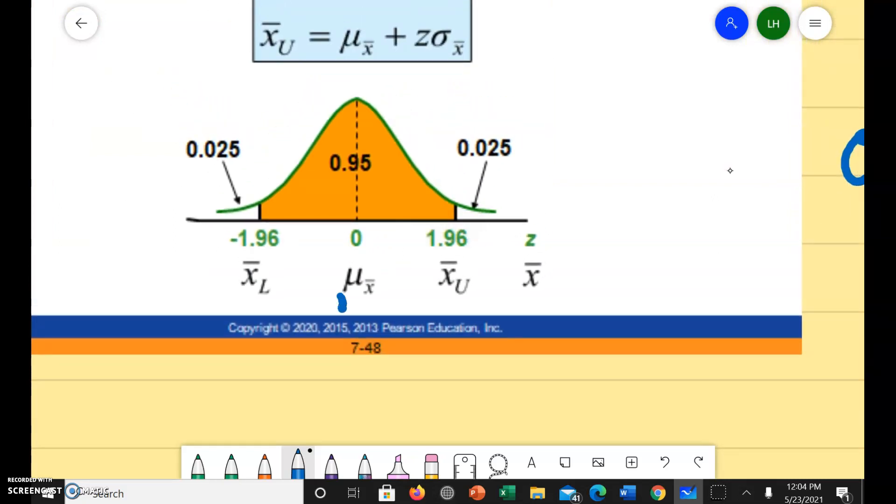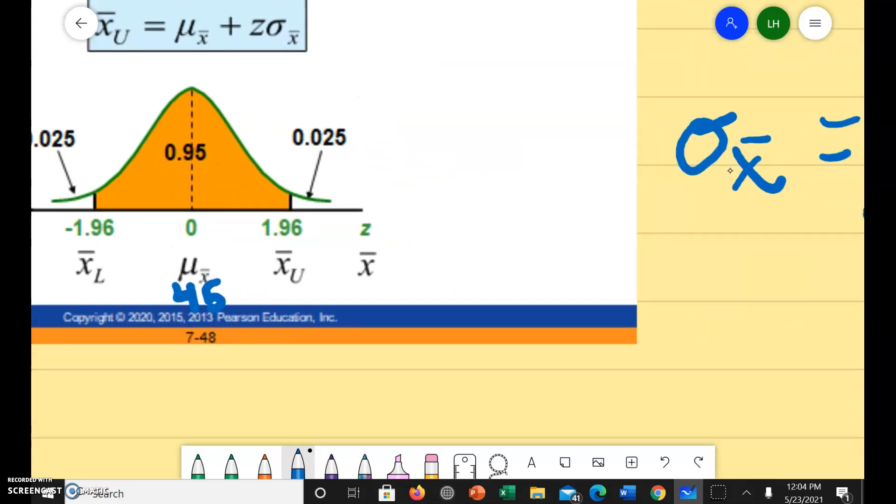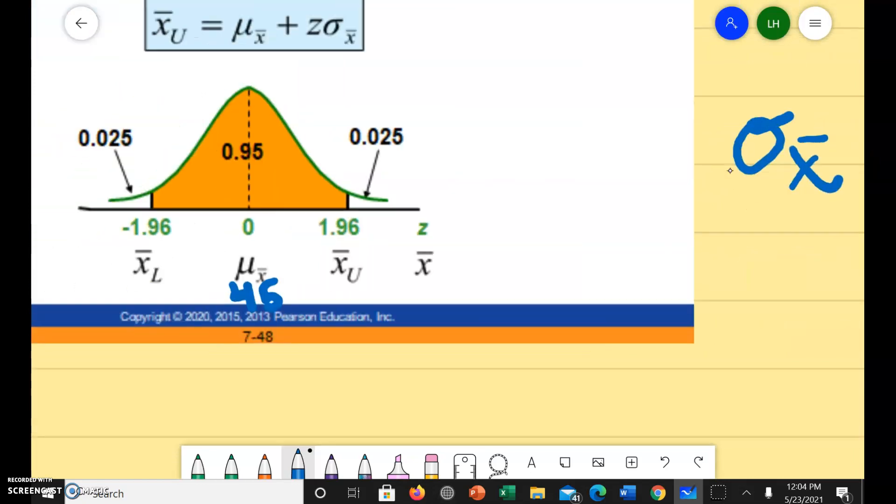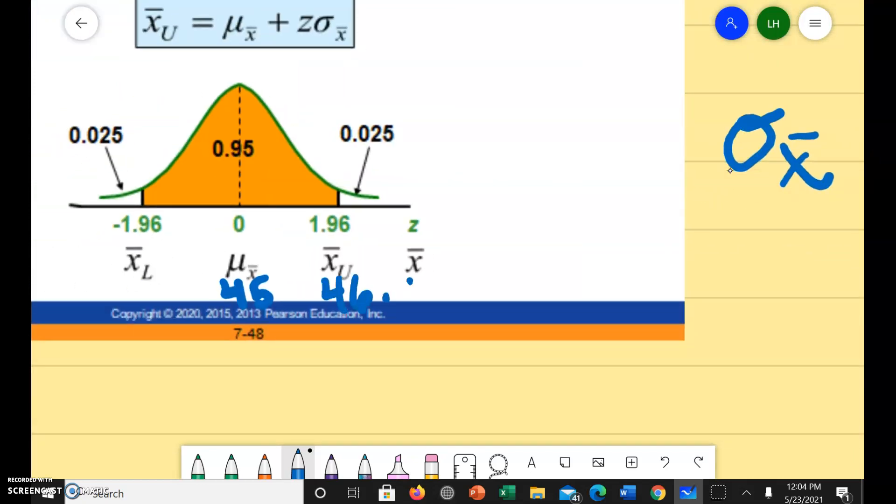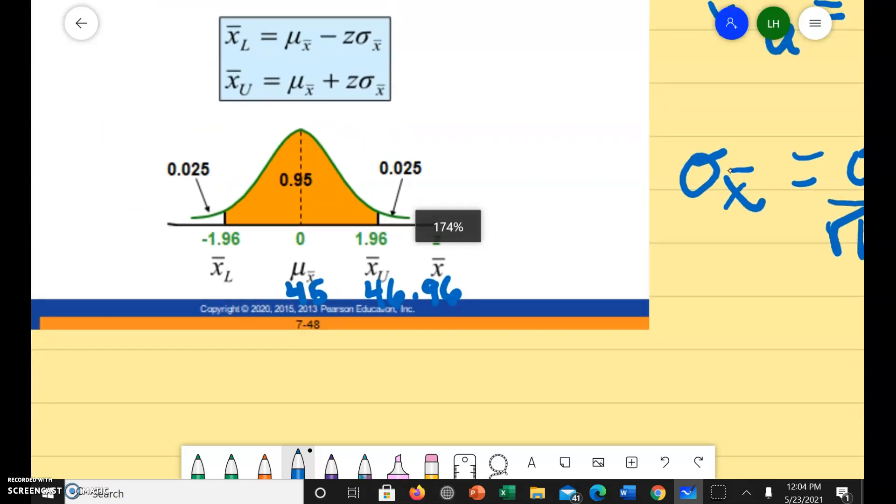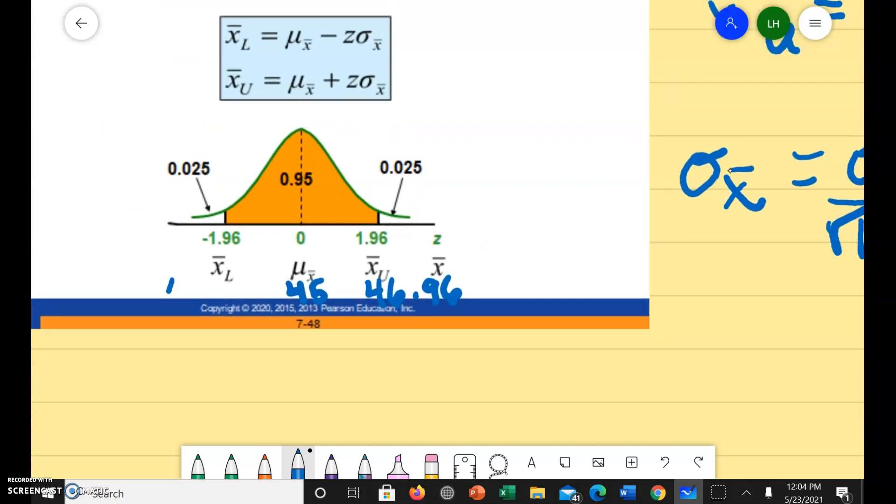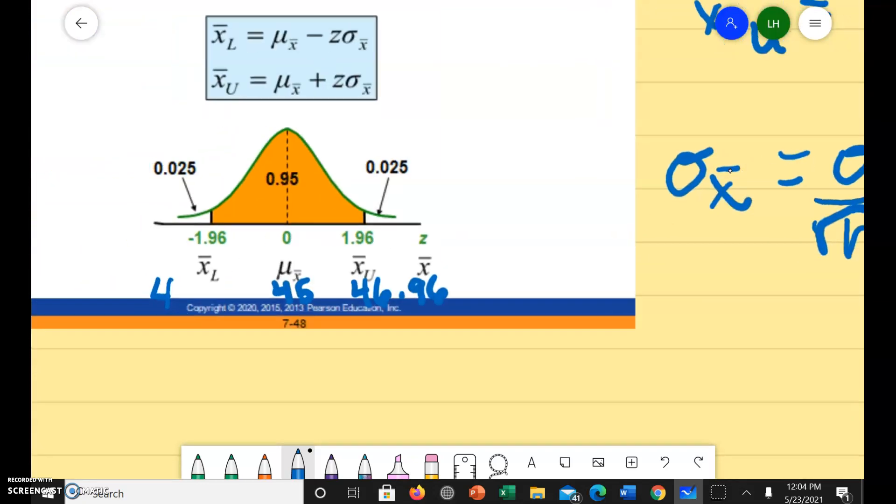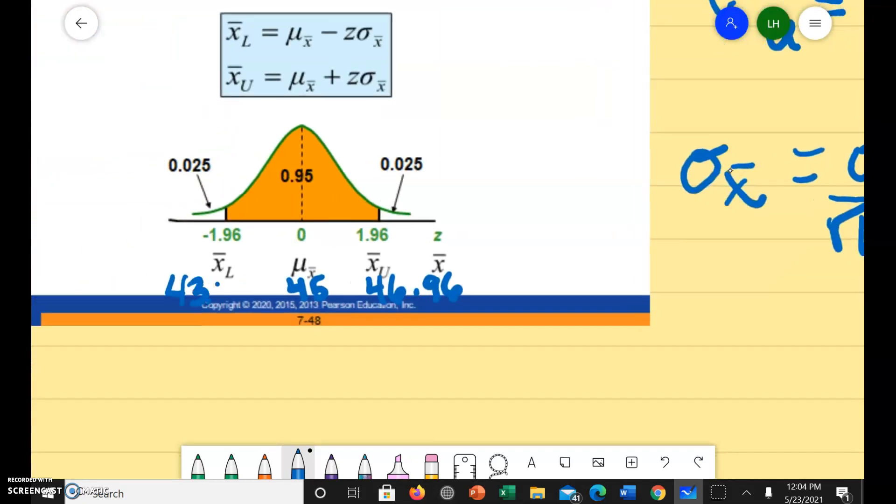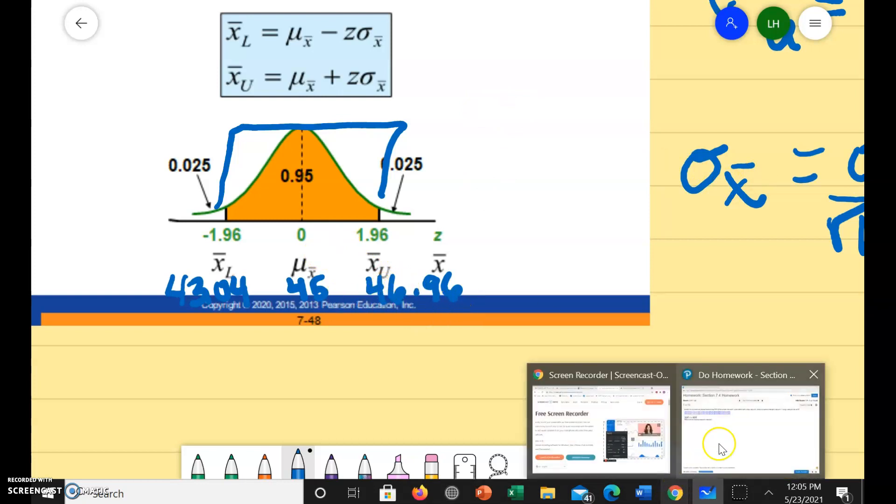Here is our mean. And then the upper limit would be 46.96. And the lower limit would be 43.04. So we're saying that 95% of the sample means will fall within the interval of 43.04 to 46.96.